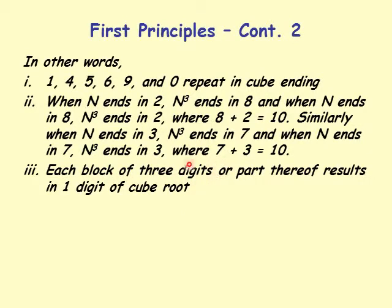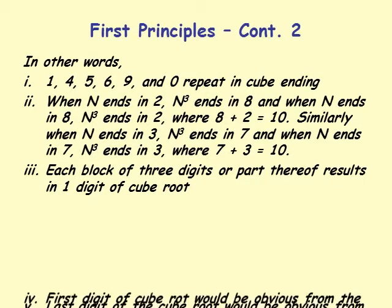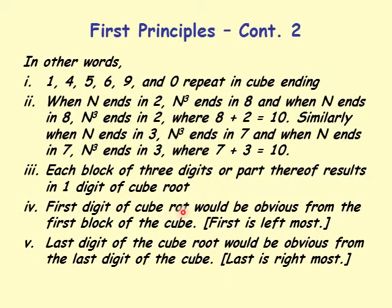Each block of 3 digits, or part thereof, results in 1 digit of the cube root. The first digit of the cube root — that is, the leftmost digit — would be obvious from the first block of the cube. The last digit of the cube root — the rightmost — would be obvious from the last digit of the cube.